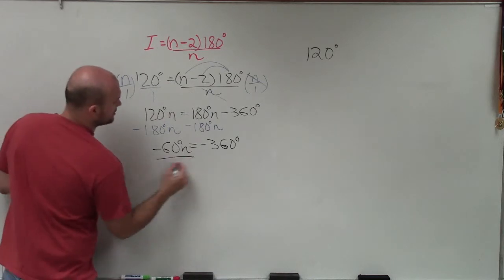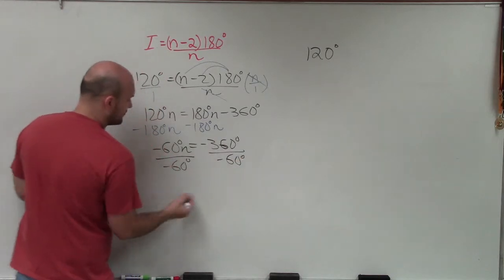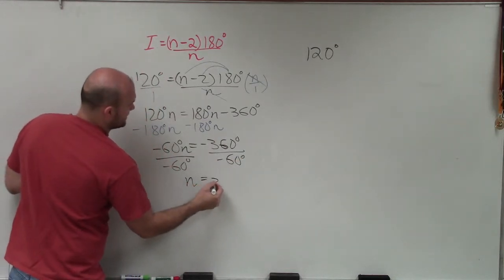Now I need to solve for n. So I'll divide by negative 60 degrees on both sides, using the division property of equality. And therefore, I get n equals 6.